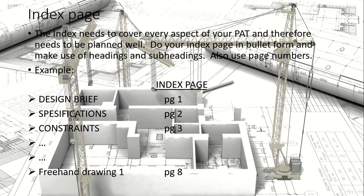The index page needs to cover every aspect of your PAT, so you need to plan it well — thinking from the beginning all the way through to the end. Do your index page in bullet form and make use of headings and subheadings, and include page numbers. For example: design brief on page 1, specifications on page 2, constraints on page 3, and hand drawing 1 on page 8. You will have quite a full list.